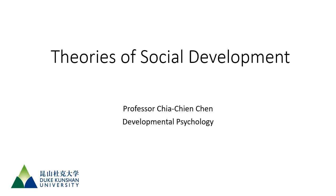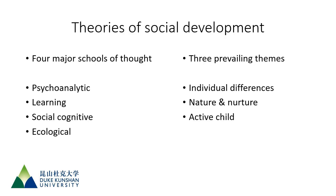Why is it all lumped together under social development? Because social development is the primary way we understand ourselves in relation to other people and how other people view us. There are four major schools of thought: the psychoanalytic, the learning aspect, social cognitive, and the ecological school of thought.